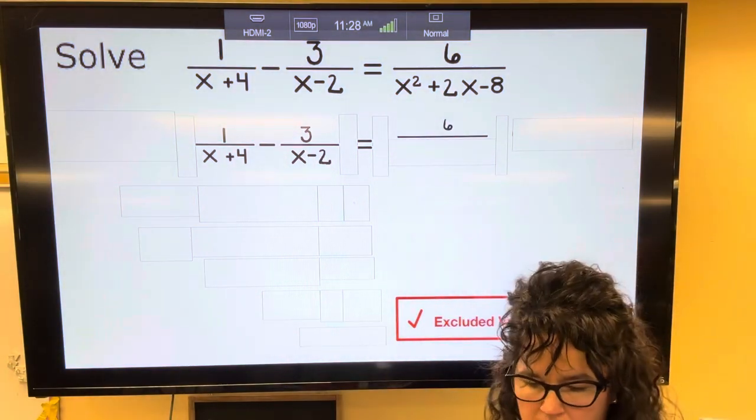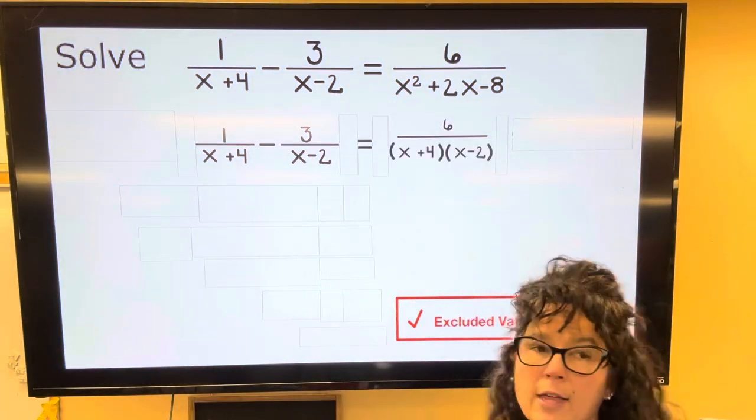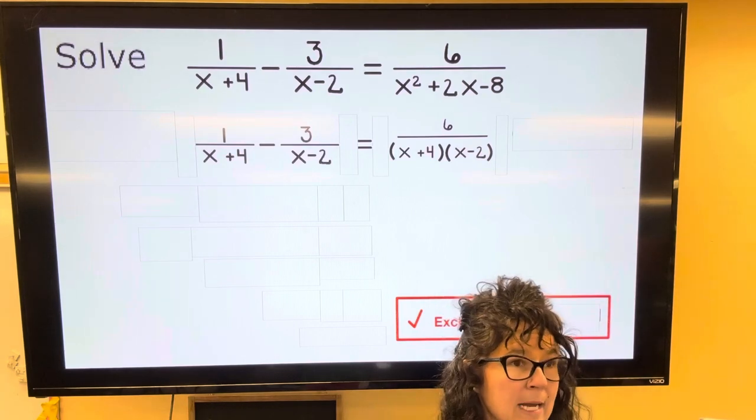Okay, so when I factor that one, I'm going to end up with x plus 4 multiplied by x minus 2.